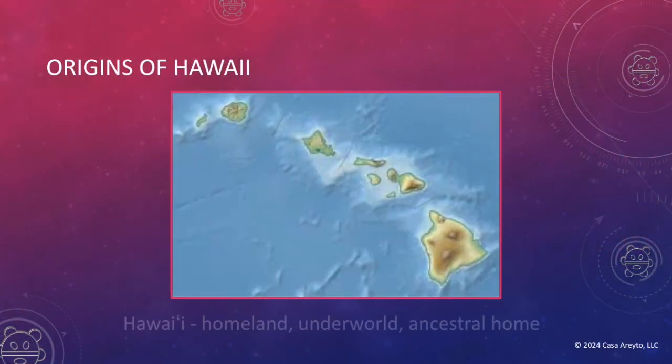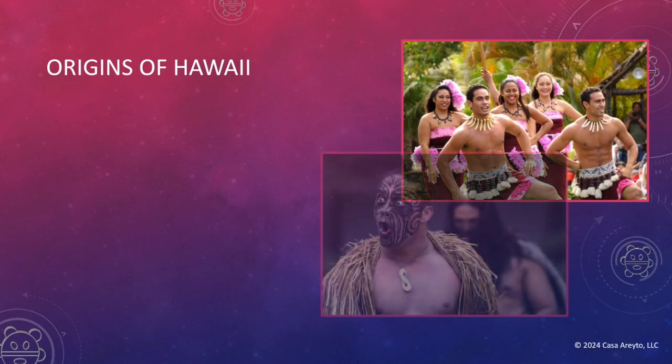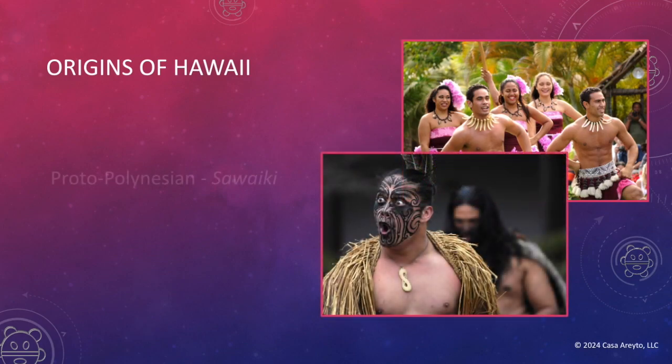Now, not all of the examples of Kaikunagu islands were actually Taino homelands. There was one — Hawaii — that is not a Taino homeland, but I wanted to bring this up because the word Hawaii has an interesting origin. The word may actually mean homeland, underworld, or ancestral home. And this word Hawaii comes from the proto-Polynesian Sawaiki.